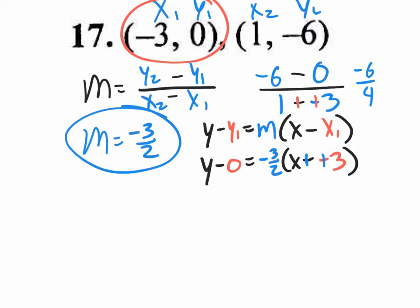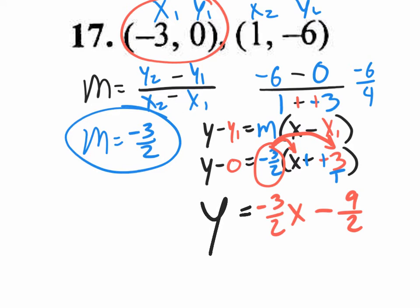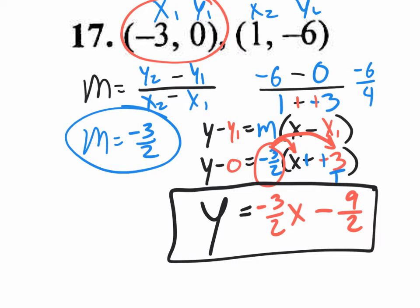And slope-intercept does not have parentheses. So let's distribute that negative 3 halves. So when you distribute the negative 3 halves, negative 3 halves times x is negative 3 halves x. When you distribute negative 3 halves times 3, that's negative 9 over 2. That's if you were to put the 3 over 1. And then multiply it 3 times 3 is 9, 2 times 1 is 2. And the y is by itself, we have y equaling negative 3 halves x minus 9 halves. Believe it or not, that is your answer.